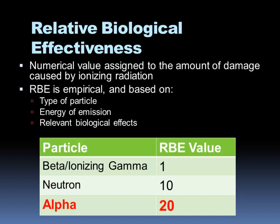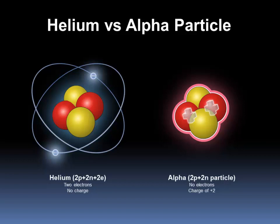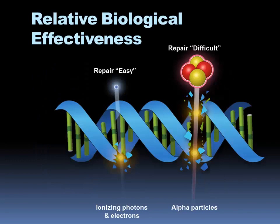The alpha particle is very similar to a helium nucleus; both are comprised of protons and neutrons, with helium also having electrons orbiting the nucleus. In terms of biological effectiveness, beta particles and high-energy ionizing gamma radiation cause DNA strand breaks, but they tend to be single strand breaks, which can be repaired by enzymatic repair mechanisms because the strand is still intact. Alpha particles cause much more local molecular damage and have the potential to induce double strand DNA breaks, which are very difficult for the body to repair because those ends are discontinuous.